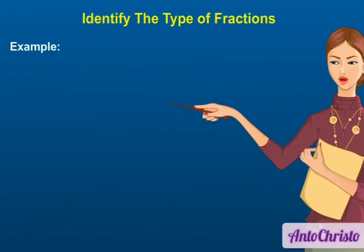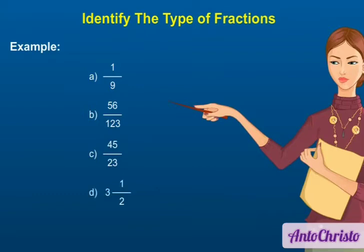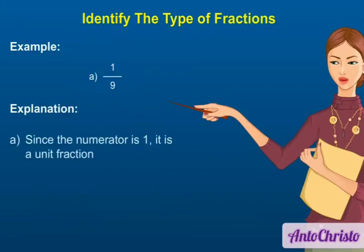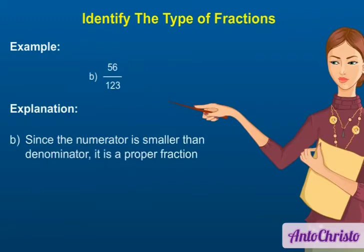Example: Identify the type of fractions. A) 1/9, B) 56/123, C) 45/23, D) 3 and a half, E) 44/44. Explanation: A) Since the numerator is 1, it is a unit fraction. B) Since the numerator is smaller than the denominator, it is a proper fraction.